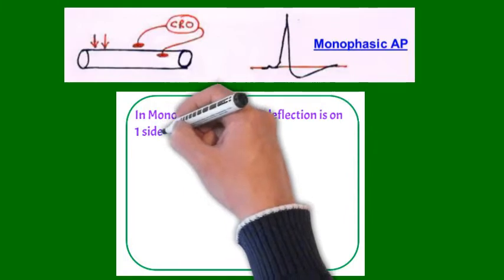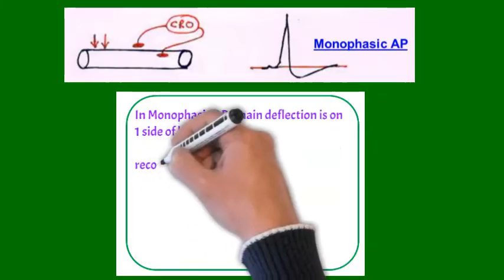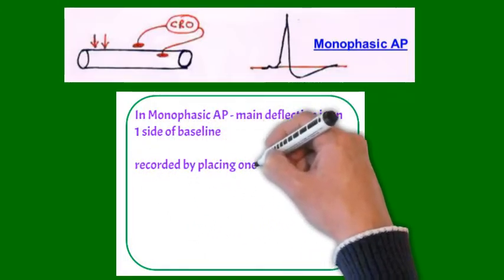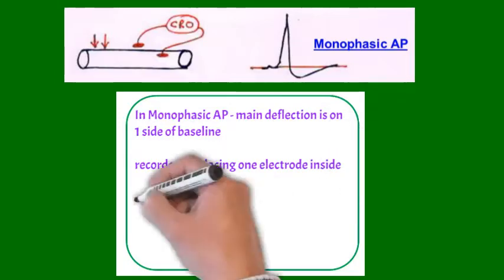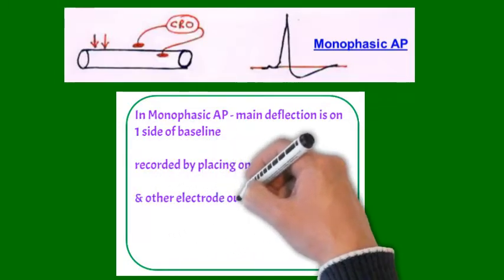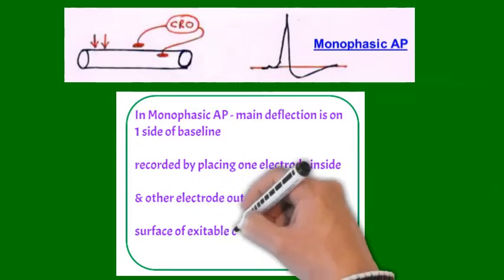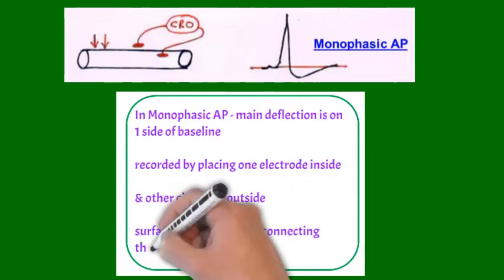Let's see monophasic action potential, in which main deflection is only on one side of baseline. It is recorded by placing one electrode inside and one electrode outside the excitable tissue and connecting it with voltmeter or CRO.